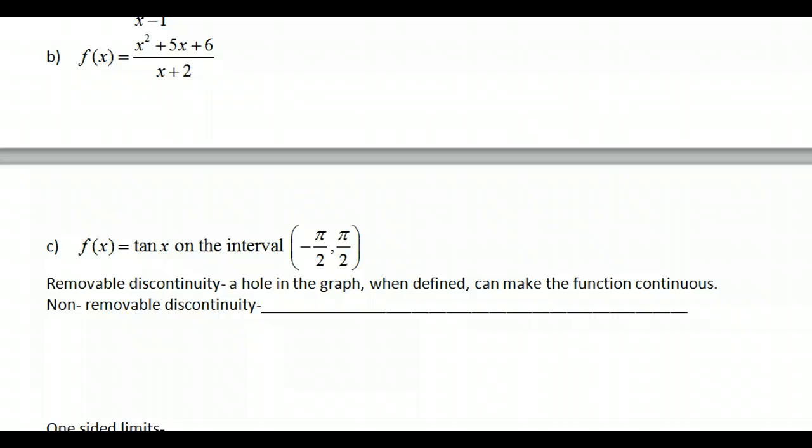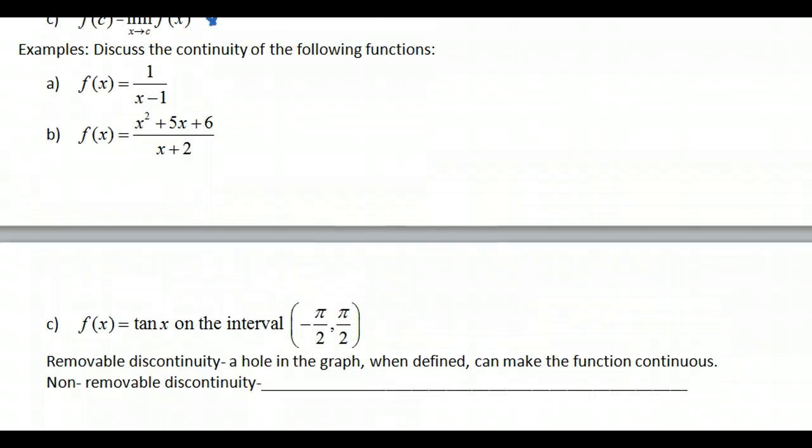So if we look at some examples, we have this one here, f of x is equal to 1 over x minus 1. I think you can see that at x equal to 1, we're going to have a vertical asymptote. And when we have a vertical asymptote, obviously it's not continuous.